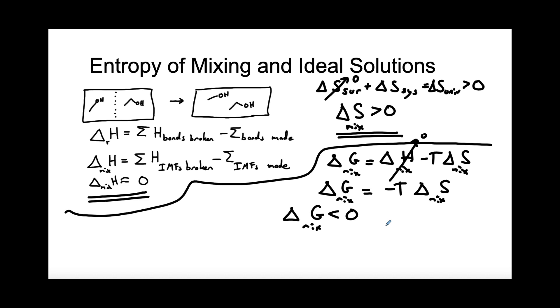So anytime we mix molecules that have similar IMFs, we're going to have these properties: a negative delta G of mixing, a positive delta S of mixing, and an enthalpy of mixing that's approximately zero.